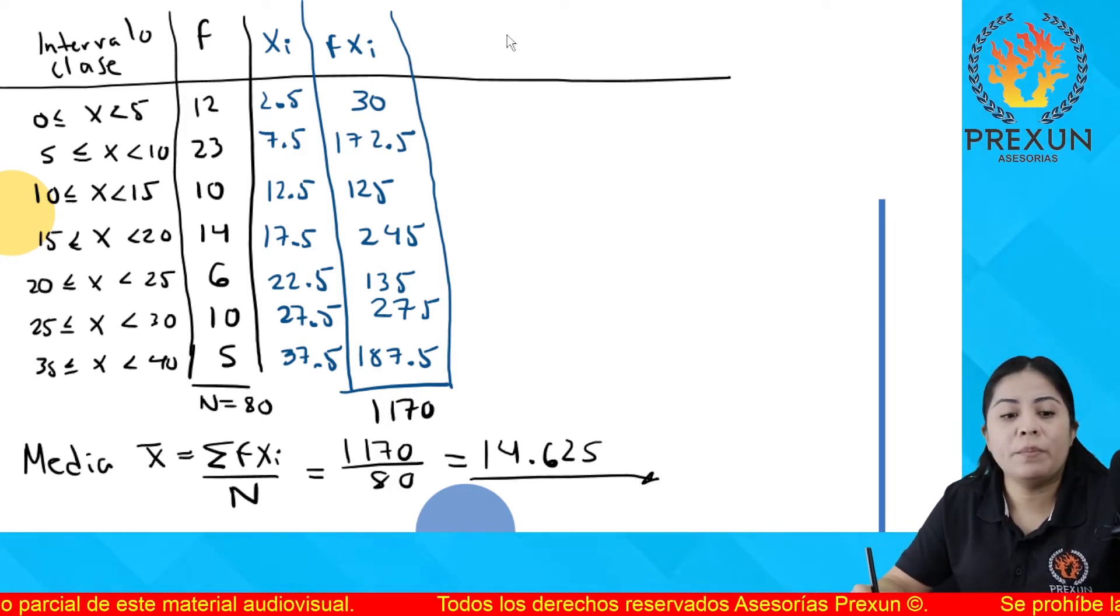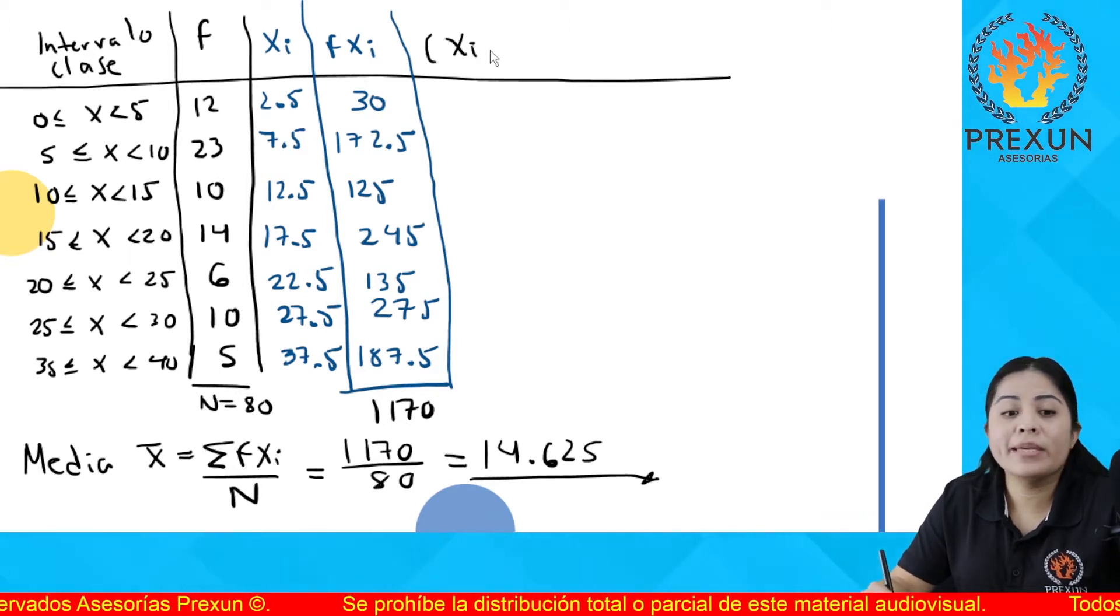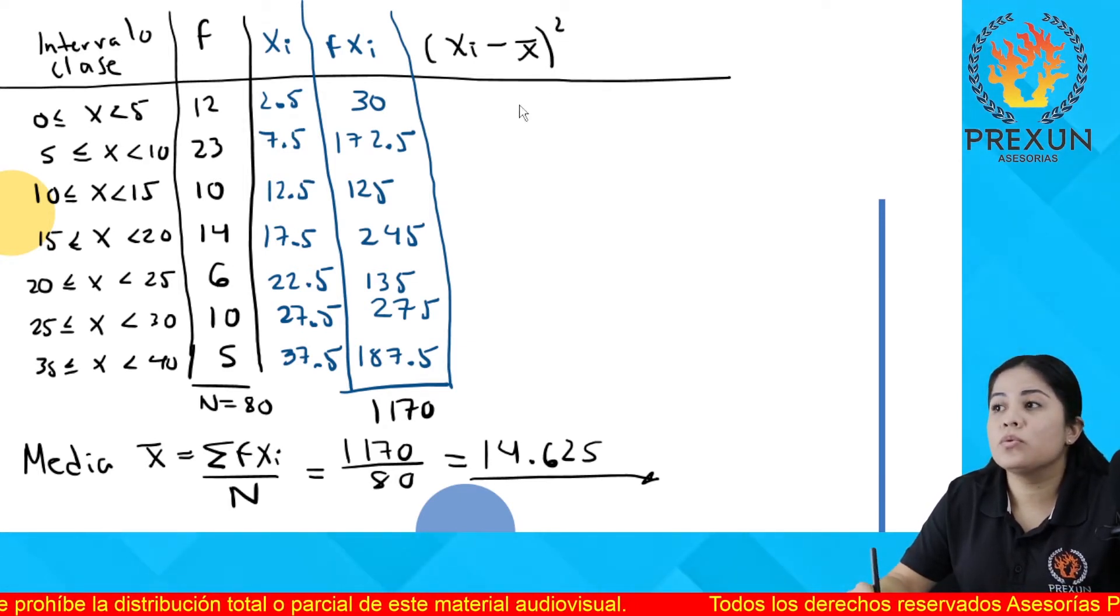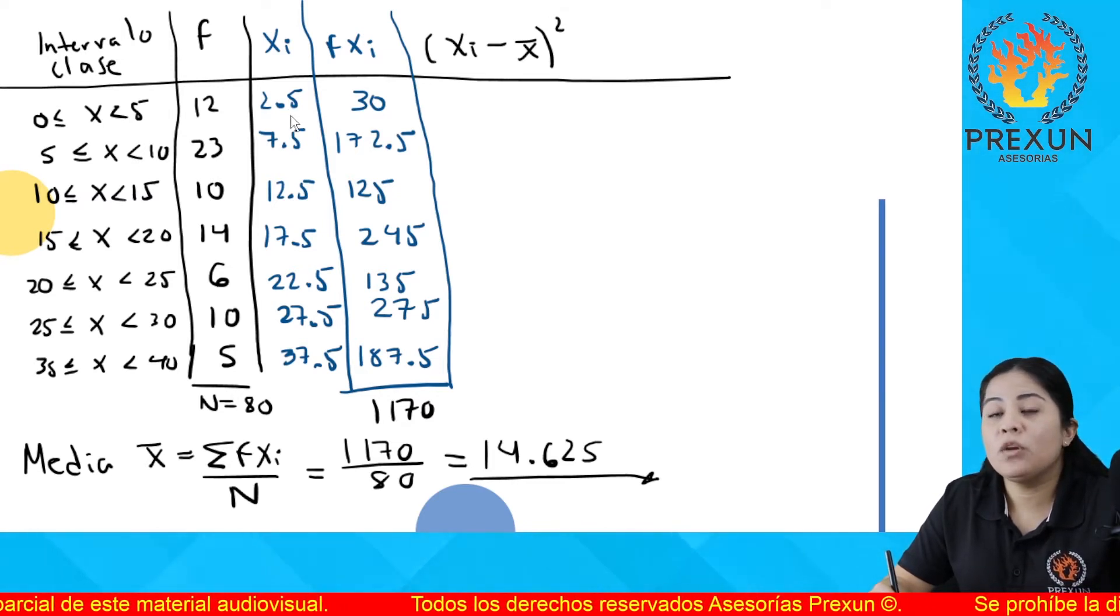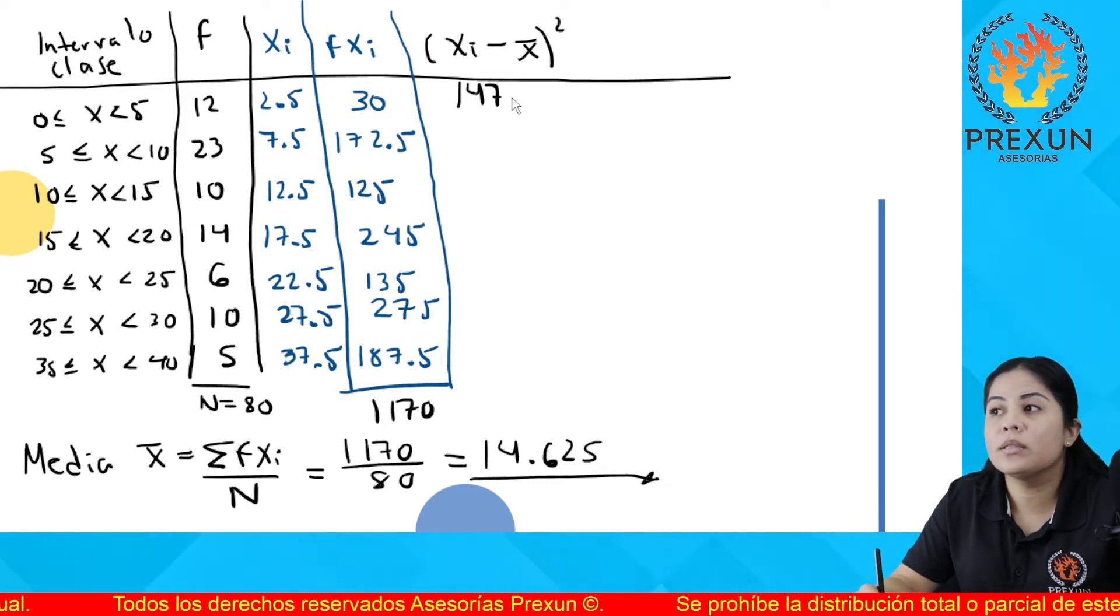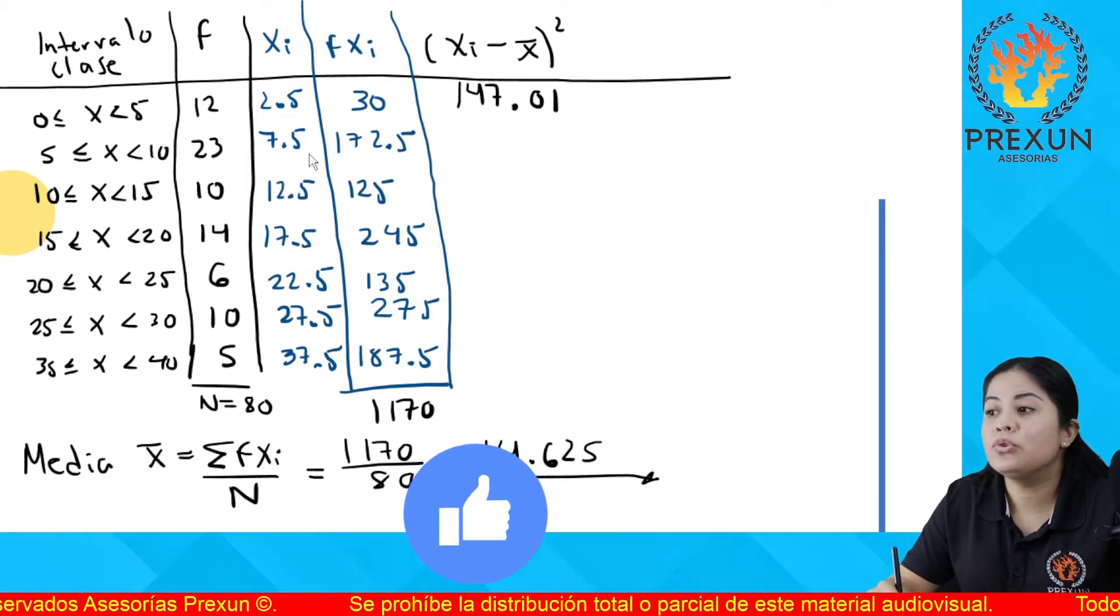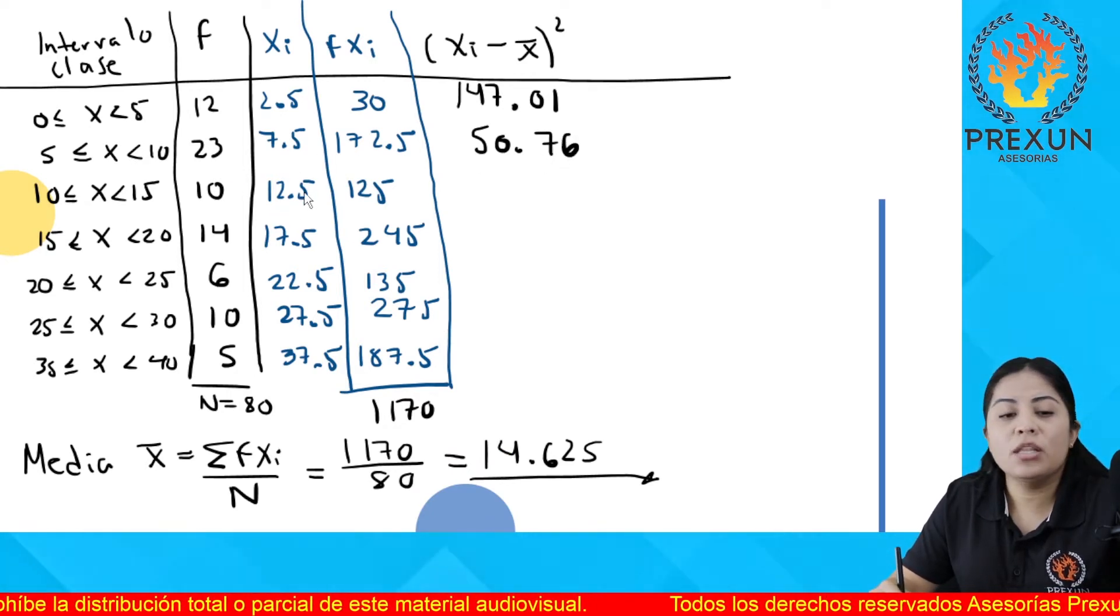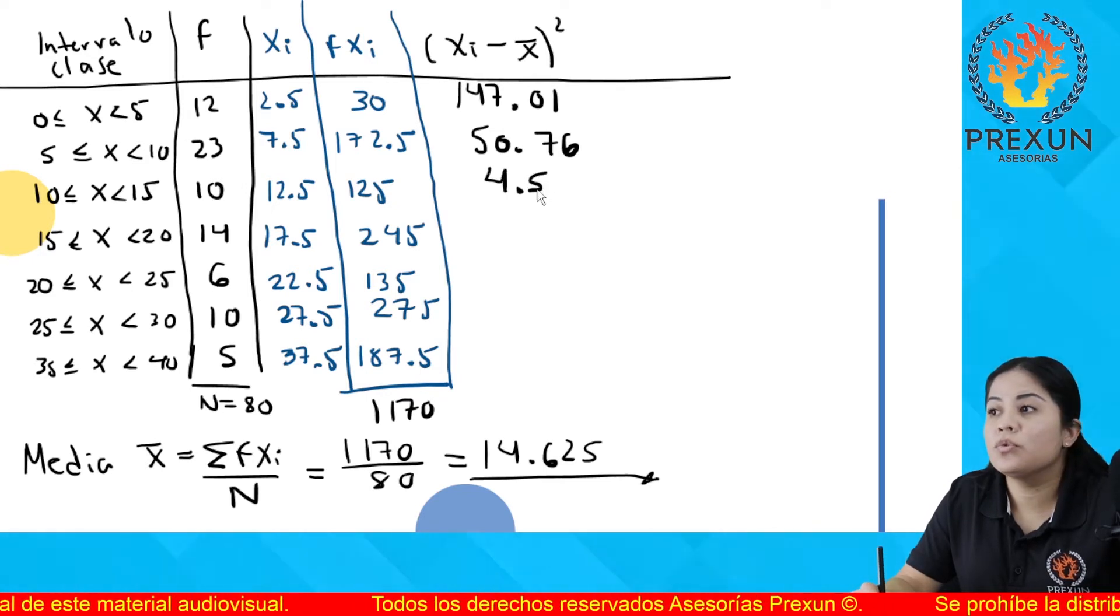Ahora voy a determinar el dato representativo, que es la marca de clase menos la media obtenida de cada uno de los datos y el resultado al cuadrado. Al empezar tengo 2.5 menos 14.625 y ese resultado al cuadrado es 147.01. El que sigue 7.5 menos 14.625 y ese resultado al cuadrado es 50.76. El que sigue 12.5 menos la media y el resultado al cuadrado es 4.51.